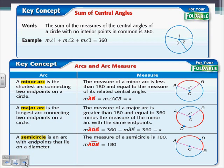Arcs are the length of the circle that goes from the endpoints of a radius on the circle to the endpoint of another radius on the circle. We have arc AB shown in the bottom right as an arc. A minor arc is the shortest arc connecting two endpoints on a circle. The measure of a minor arc must be less than 180, and it's equal to the measure of its related central angle. So the measure of arc AB is equal to the measure of its central angle, which is angle ACB, shown to be x degrees.